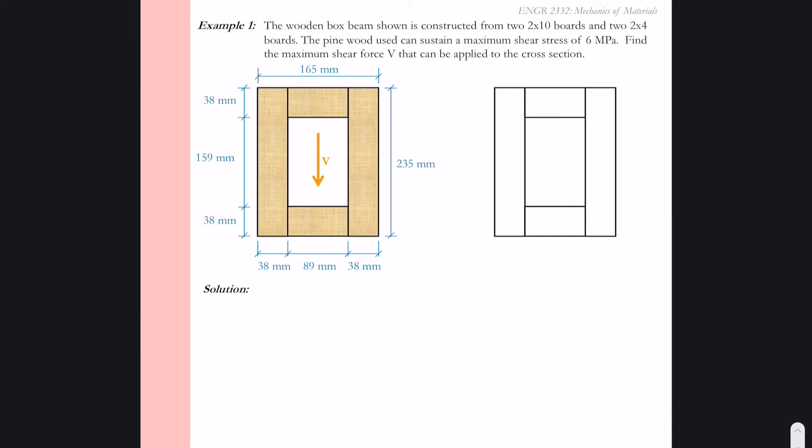So let's look at example one. In example one we have a wooden box beam that's constructed from two 2x10 boards in the verticals and then there's two 2x4s connecting them in the horizontal direction.